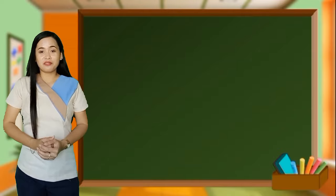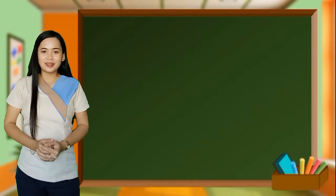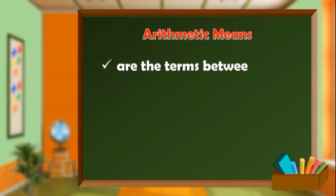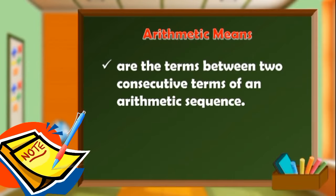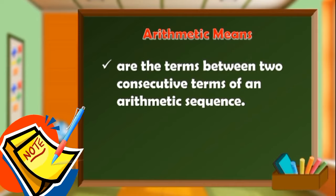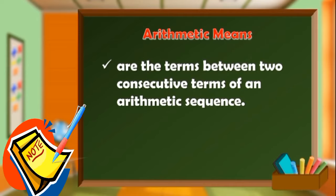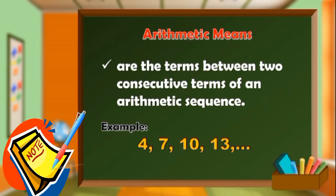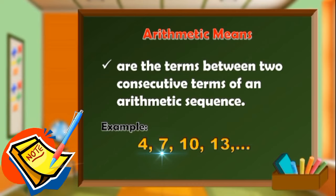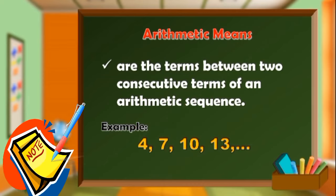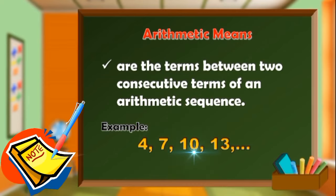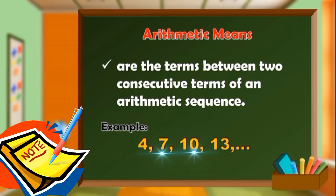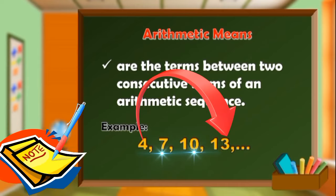What we did is getting the nth term of arithmetic sequence. It's simple, right? All you have to do is to use the formula. Moving on to arithmetic means. Arithmetic means are the terms between two consecutive terms of an arithmetic sequence. Going back to the arithmetic sequence 4, 7, 10, 13, and so on, 7 is the arithmetic mean of 4 and 10, while 10 is the arithmetic mean of 7 and 13. And 7 and 10 are the arithmetic means of 4 and 13.